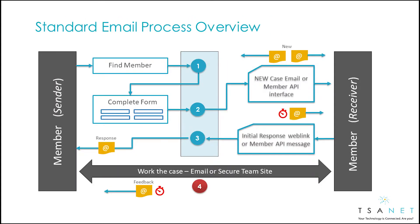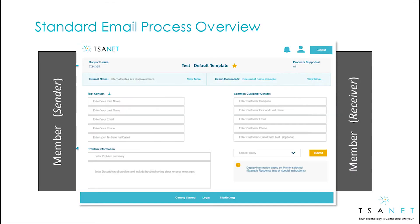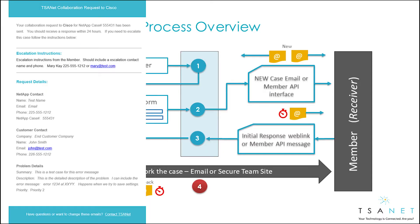Let's take a look at the end-to-end process to better understand how TSA-NET Connect works. First, the sender logs into TSA-NET Connect and finds a partner. They fill out their process form, select a priority, and hit Submit. Then the email process completes the connection.